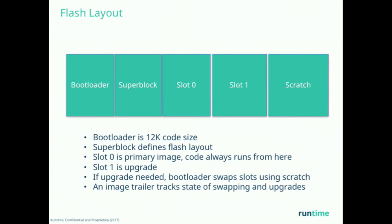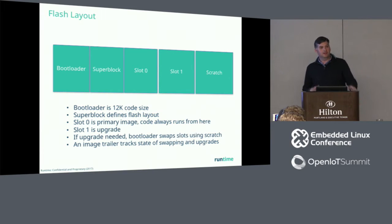The idea behind the bootloader is to make it very small and secure for small embedded systems. The type of processors we run on include things like the Nordic NRF51, which has 16K of RAM and 128K of flash — very, very small embedded devices. They can grow in size; some will have four megs of RAM and eight megs of flash, but that's typically where it tops out. If it gets any bigger, people tend to run Linux. It's really designed to fit within a small code footprint.